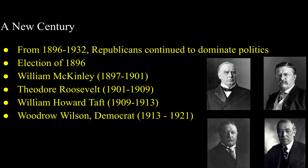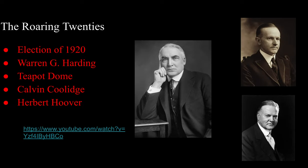After Woodrow Wilson, Republicans regained control of the White House with Warren G. Harding in 1920. Harding unfortunately did not serve a full term and eventually died in office in 1923. After his death, many scandals were revealed—most notably, the Teapot Dome scandal. Upon Harding's death, his Vice President Calvin Coolidge took office and served until the election of 1928, in which Herbert Hoover was elected president. All three of these men took a very hands-off approach to business and their economic policies.